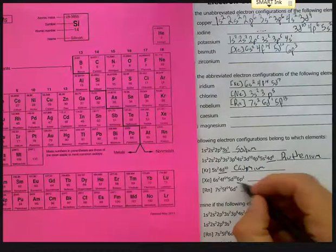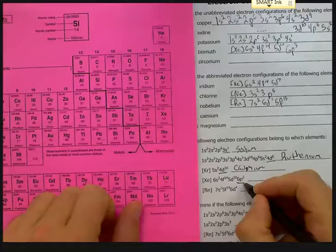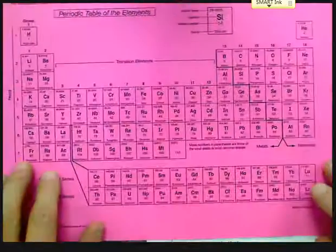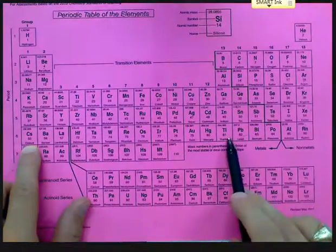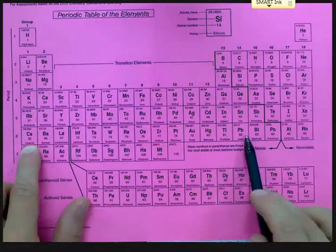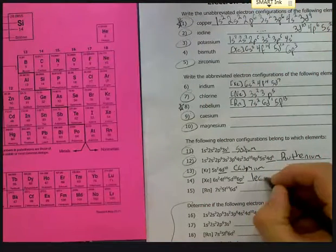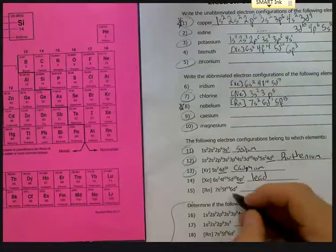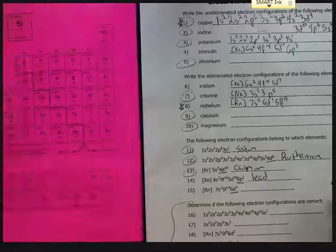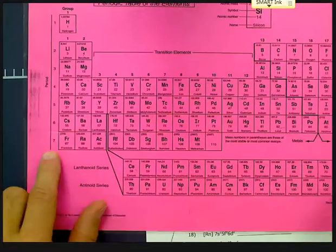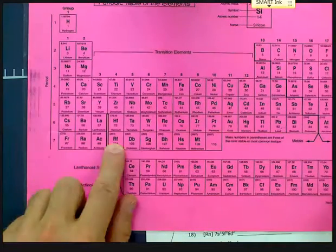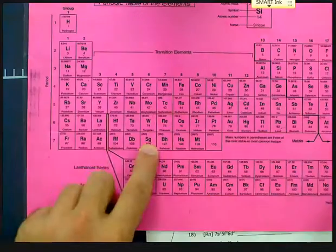The last two here, 6p2. So we find the 6th energy level, find the 6th energy level here, cut across the p-block and count in two. Lead. Finally, something that ends in 6d4. 6d4 means we're dealing with the 7th energy level. Here's d1, d2, d3, d4, seaborgium.